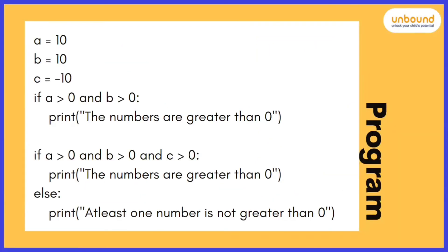So here's a program. You can see this program contains three variables: A, B, and C. And here we have used if else condition. The first if condition says if A, which is 10, greater than 0 and 10, which is B, is greater than 0, then print the numbers are greater than 0.